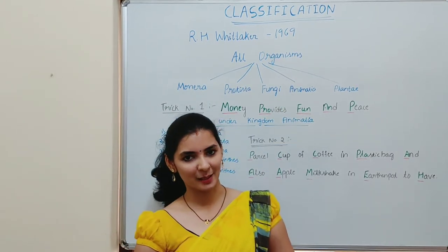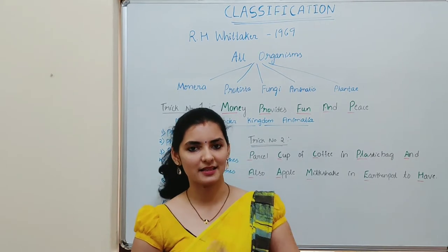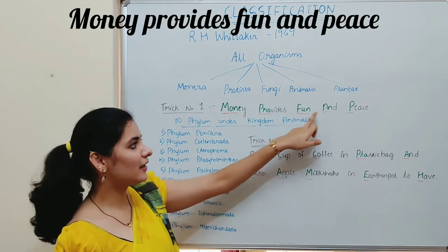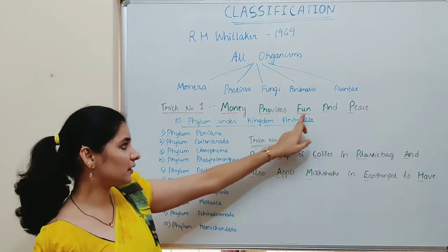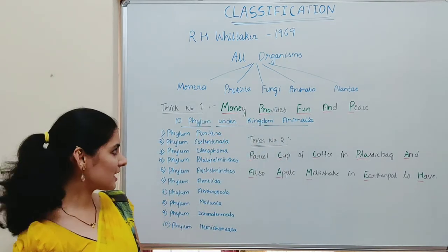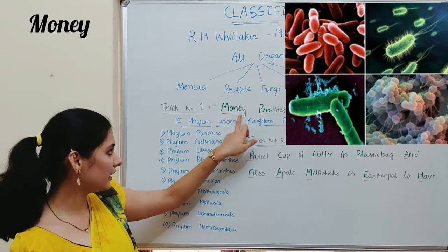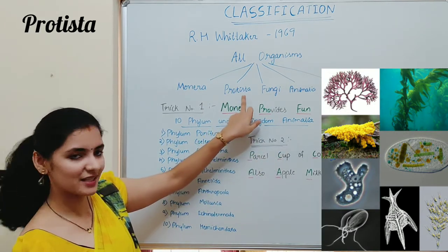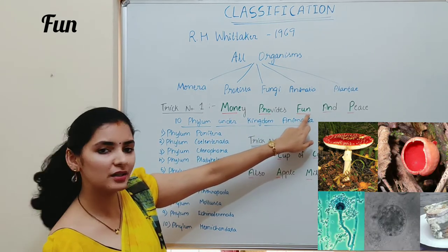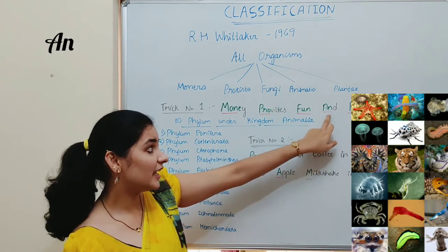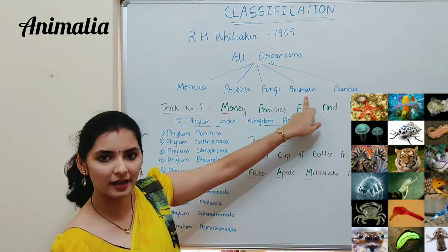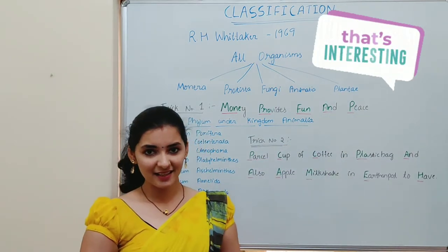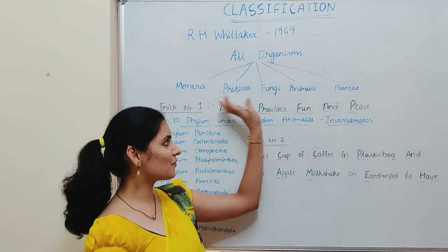Still if you feel it difficult to remember these names, then I have a trick for you. The trick is a simple sentence: 'Money provides fun and peace.' Each first letter in each word represents the names of the kingdom. For example, the letters M-O-N from 'money' represents Monera; P-R-O from 'provides' represents Protista; F-U-N from 'fun' depicts Fungi; A-N from 'and' stands for Animalia; and P from 'peace' represents Plantae. Isn't it interesting? So with this simple sentence you can remember all 5 kingdoms in order.